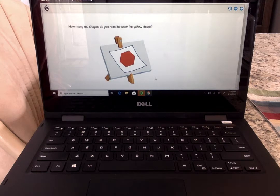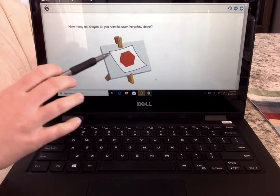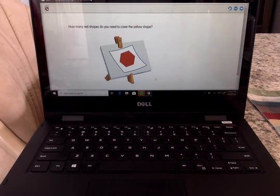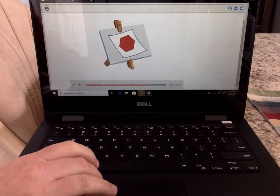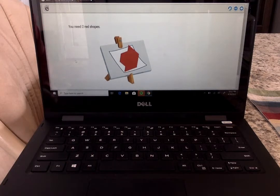How many red shapes do you need to cover the yellow shape? You watch them come in. So the two red ones, they split right down the middle. And you watch them. There's two that came right in to make that shape. How many came in? Two. You need two red shapes.